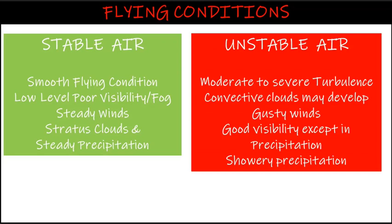Stratus clouds indicate stable air — flight will generally be smooth, but low ceiling and visibility might require instrument flight rules. Restricted visibility at or near the surface over large areas usually indicates stable air. Expect a smooth ride, but poor visibility may require instrument flight rules.